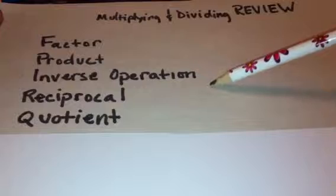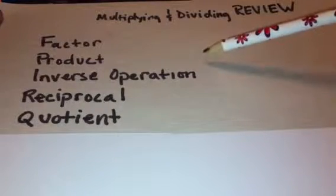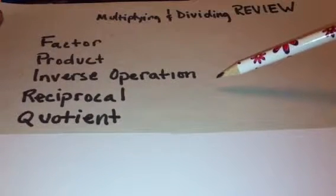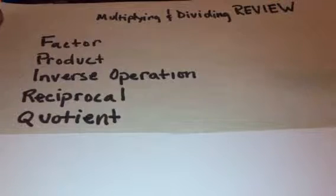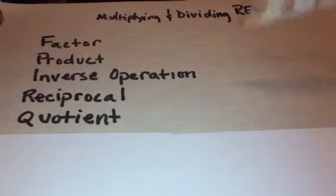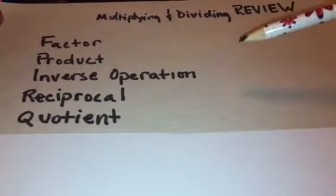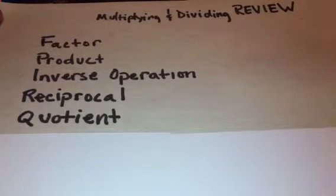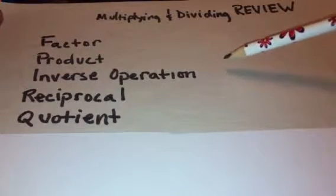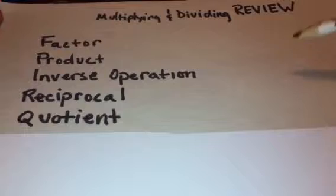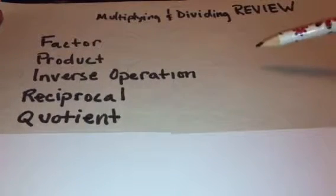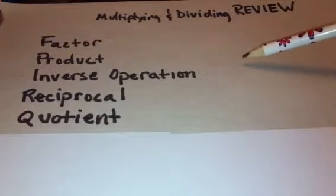Inverse operation simply stands for the concept that the reverse of multiplication is division and the reverse of division is multiplication. For example, 5 times 5 is 25. 25 divided by 5 is 5.